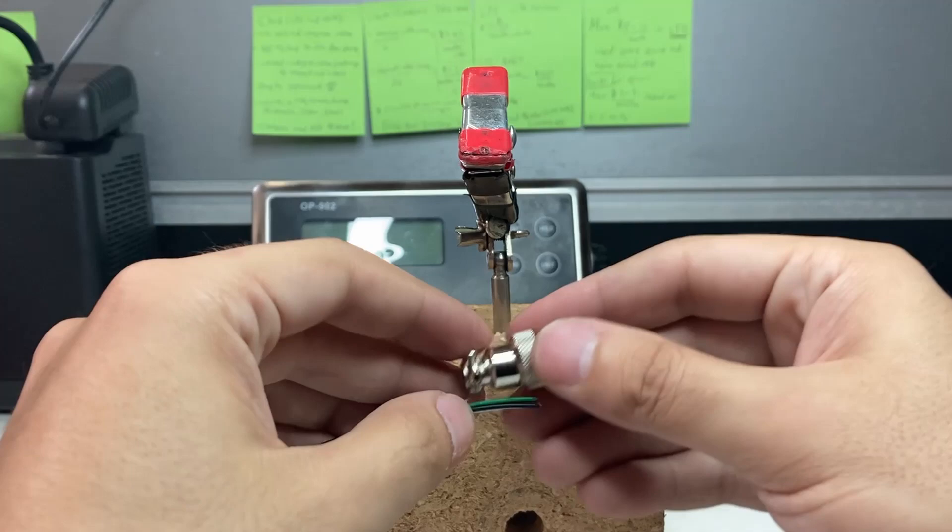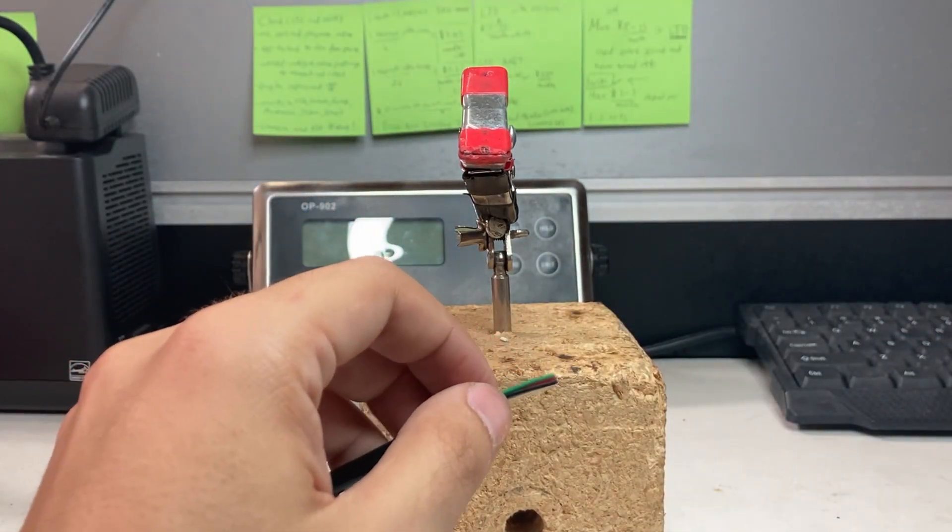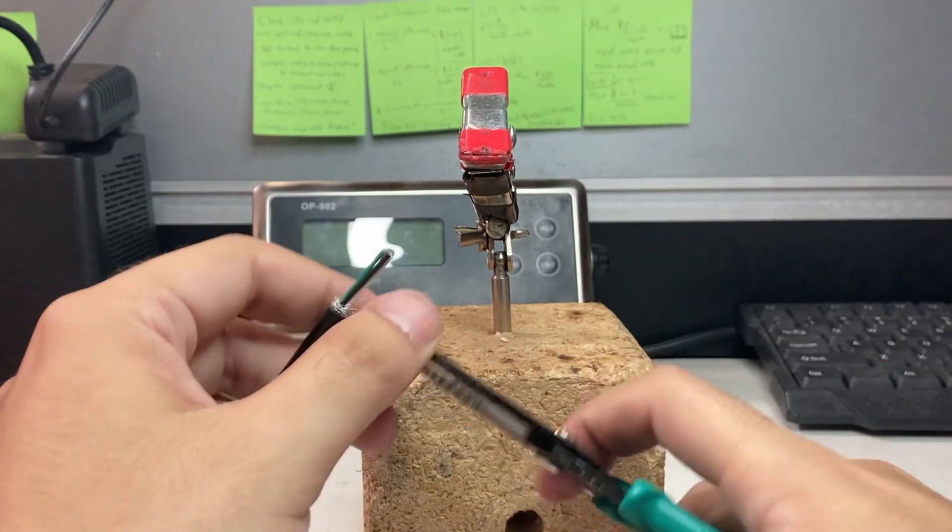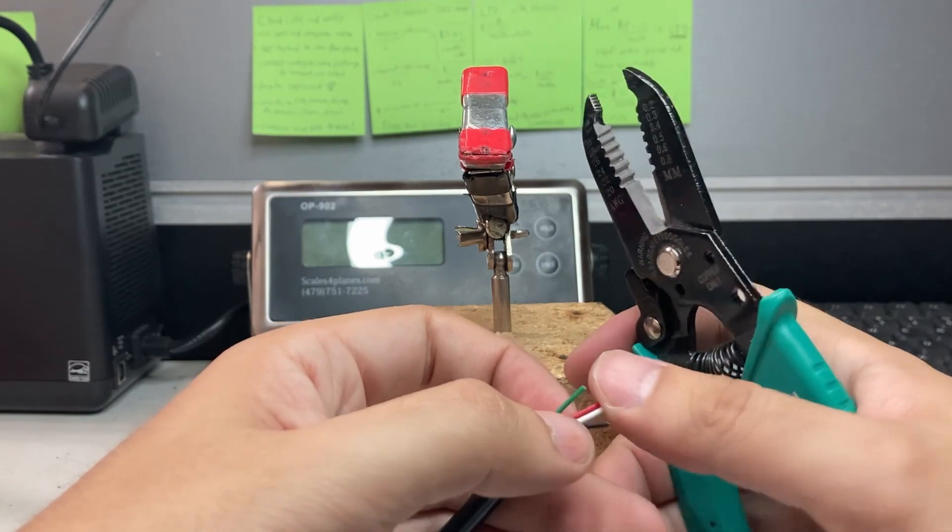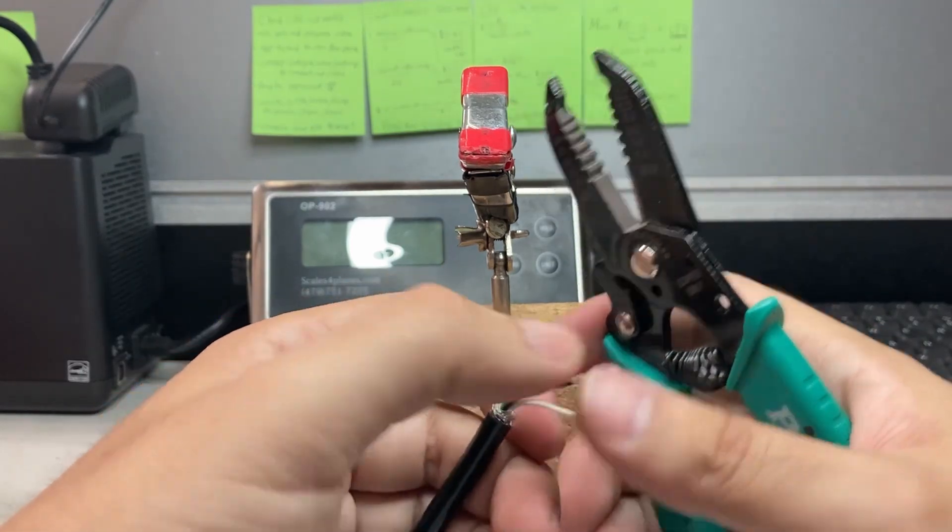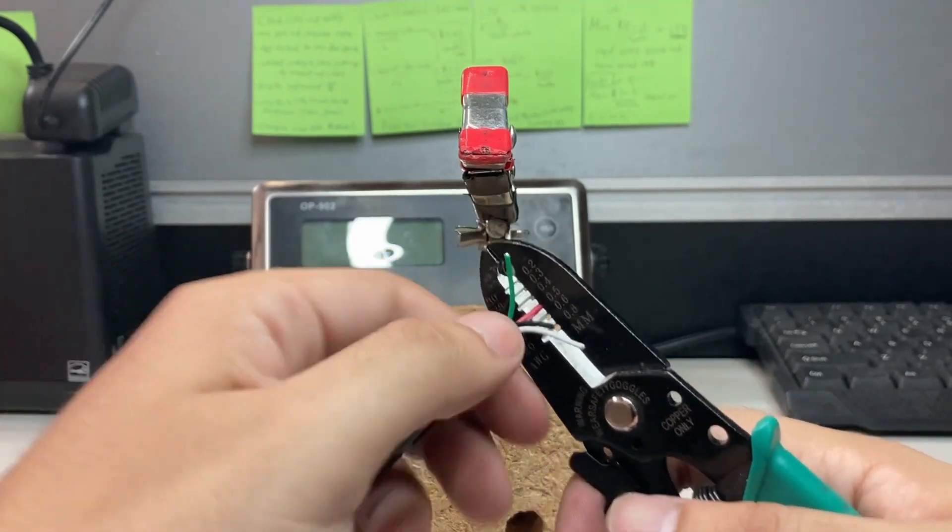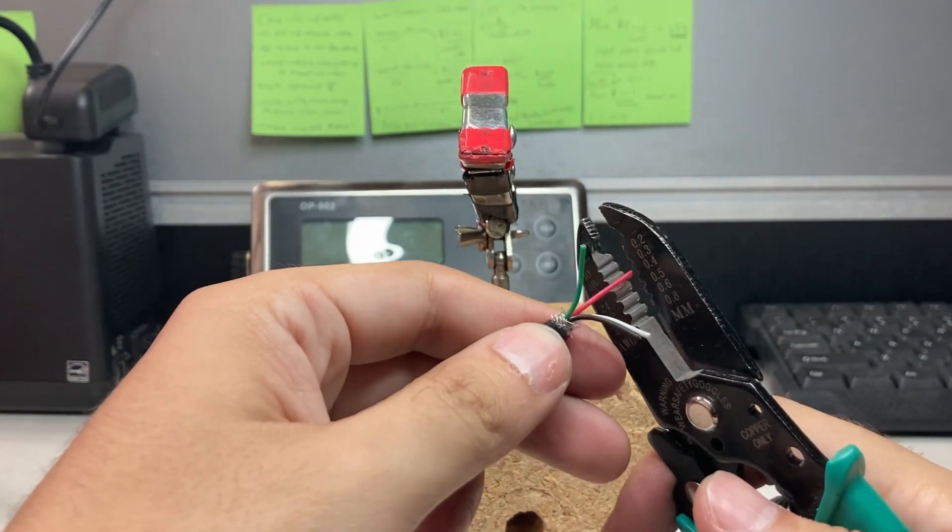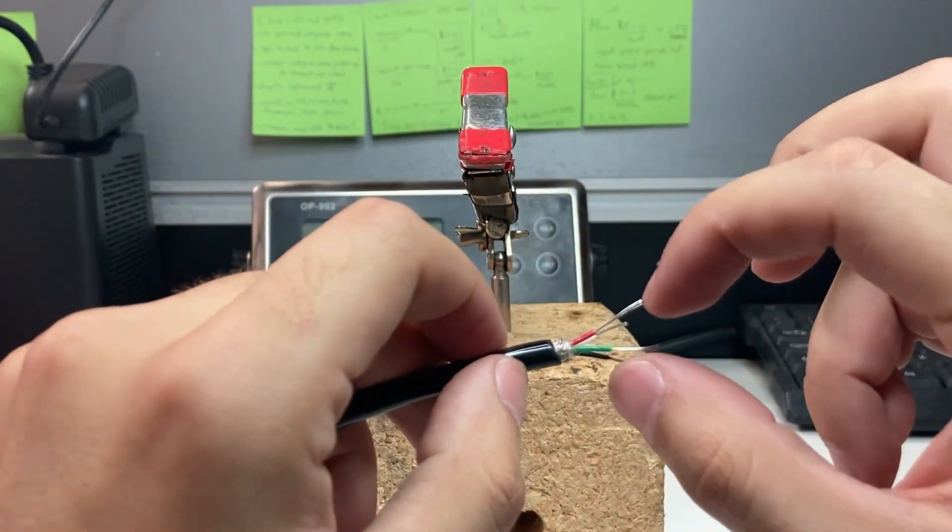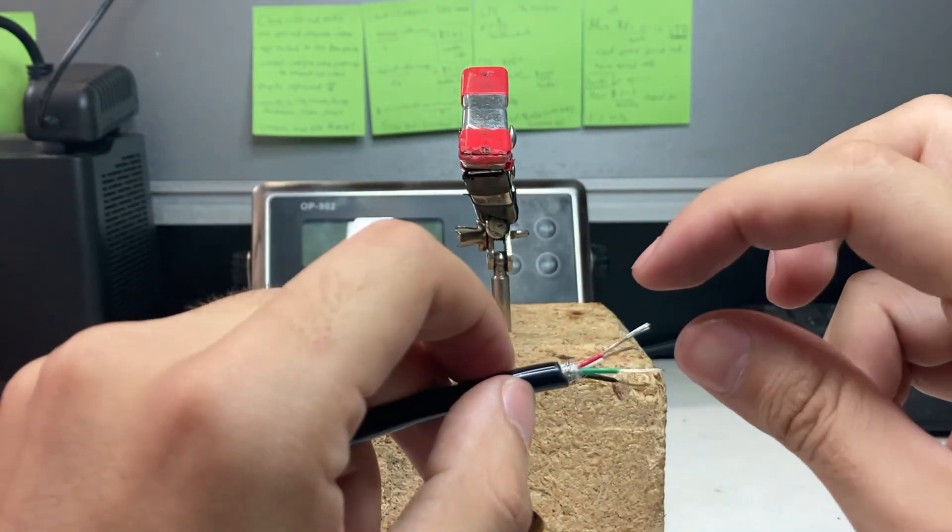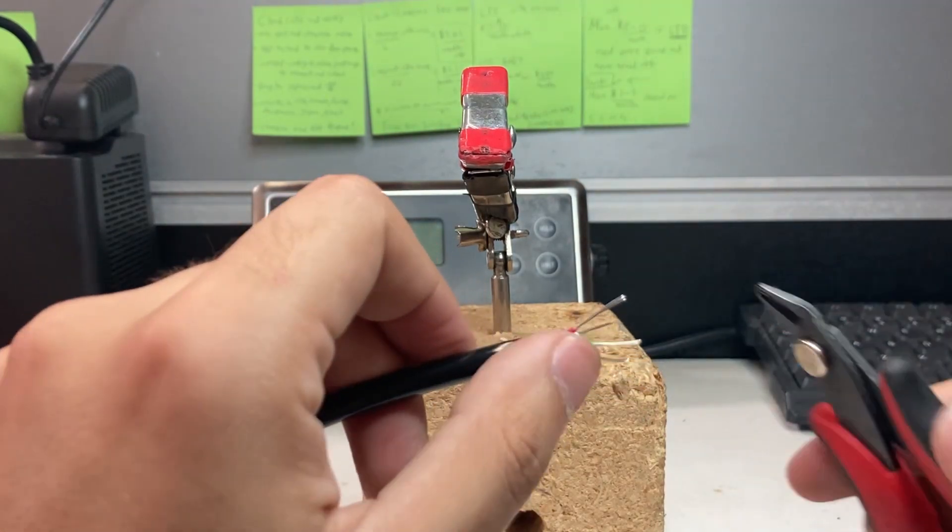Start getting a wire stripper and separate these out and start stripping these cables. Took me a couple tries but I finally got the length. See, this metal is actually too long, so what we're going to do is cut this.